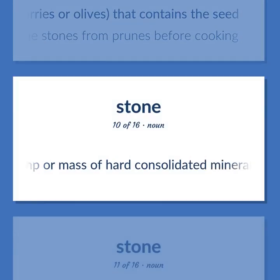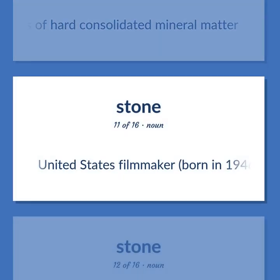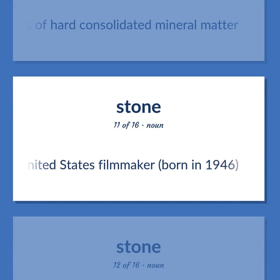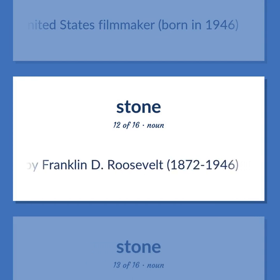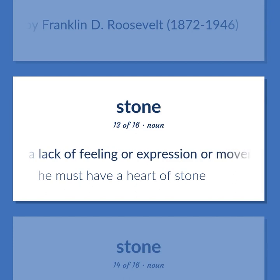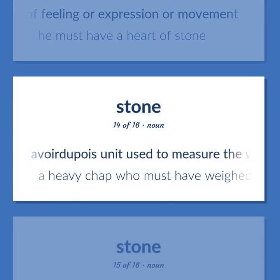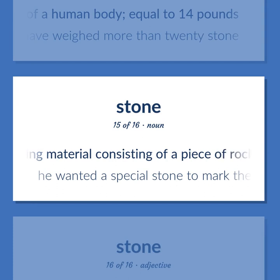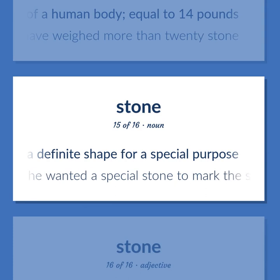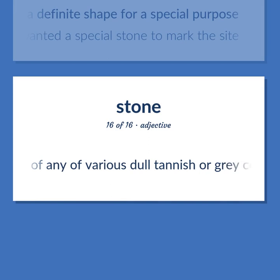A lump or mass of hard consolidated mineral matter. United States filmmaker, born in 1946. United States jurist who was named Chief Justice of the United States Supreme Court in 1941 by Franklin D. Roosevelt, 1872–1946. A lack of feeling or expression or movement. He must have a heart of stone. An avoirdupois unit used to measure the weight of a human body, equal to 14 pounds. A heavy chap who must have weighed more than 20 stone. Building material consisting of a piece of rock hewn in a definite shape for a special purpose. He wanted a special stone to mark the site. Of any of various dull tannish or gray colors.